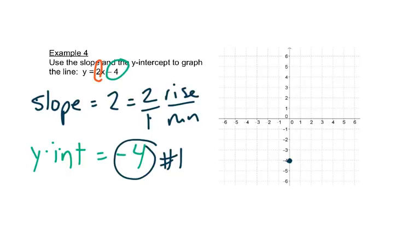And then from there we do our slope. We're going to rise 2, run 1, and we can keep going. Rise 2, run 1. Rise 2, run 1. And that gives us a nice straight line that's the graph of that equation.